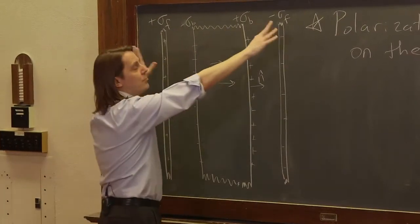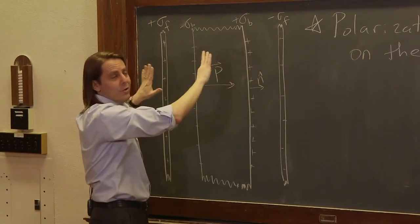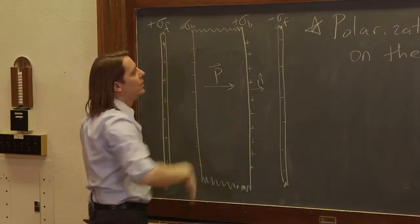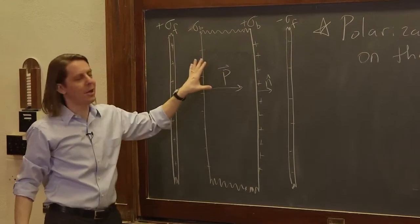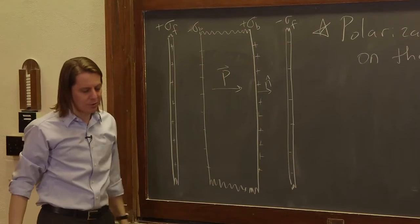In this case, it just means we get plus sigma B and minus sigma B. They're not necessarily equal to sigma free. That's not something I'm trying to say is true. That would be true if this were a metal. This is a dielectric. Some amount of charge density builds up. It depends on how polarizable the material is.